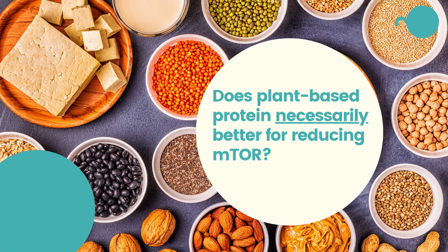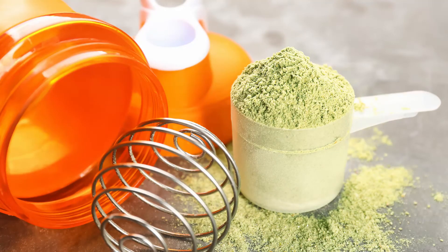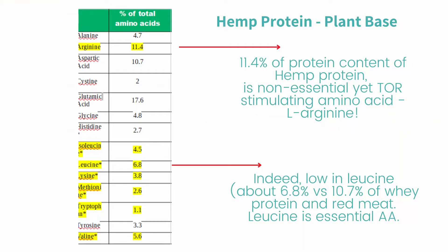This led to another question: animal-based protein has more leucine, which is true. So I thought, let's replace the whey protein I used to consume with a protein that has the least amount of leucine. The protein powder with the least leucine is hemp protein. I went to hemp protein, and lo and behold, it has a massive amount of L-arginine, which to me is much worse.